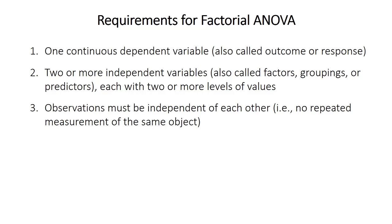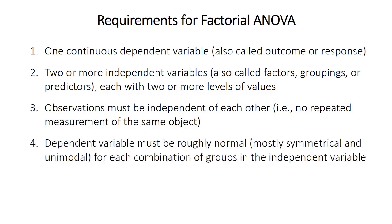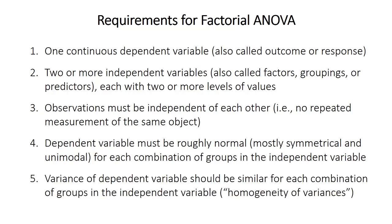Third, the observations must be independent, which typically means you shouldn't have repeated measurements made on the same objects. If you do, you'll need a repeated measures ANOVA, which isn't covered in this video. Fourth, the dependent variable must be roughly normally distributed — more or less symmetrical and unimodal for each combination of groups. The test isn't that sensitive to this unless there's a good amount of skew. Fifth, the variance of the dependent variable should be roughly similar for each combination of groups — this is called homogeneity of variances. Sample sizes are also quite important, but more on that later.